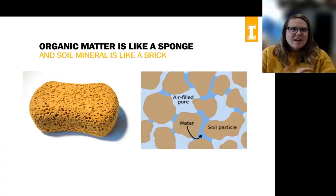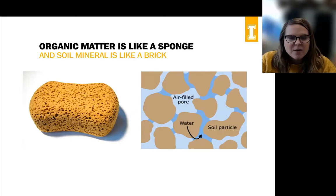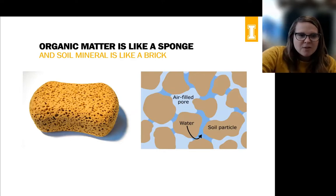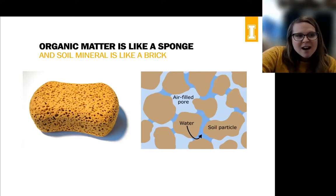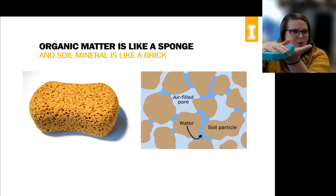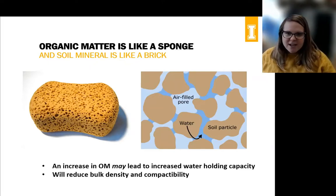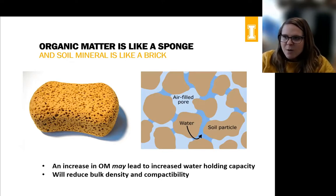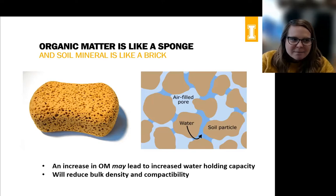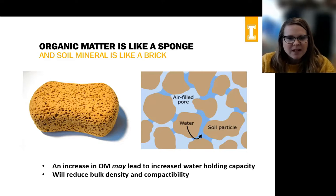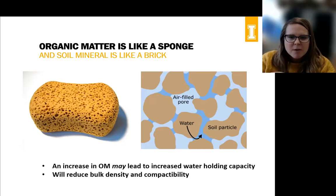Organic matter is like a sponge — it holds a lot of water, it's springy compared to a brick that's really hard. When you increase organic matter, you might increase your ability to hold water, but really you're going to reduce your density and compactibility. There are a lot of ways to measure compaction — both density and compactibility — in your soil, and we're going to go over what those measurements are and the effect that manure has been shown to have on them.